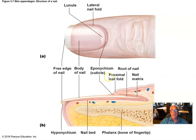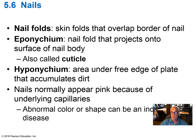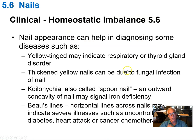Nails, an appendage of the skin, are important for protection of the tip of the finger and allow us to have a lot of capability in terms of manipulating small objects in our environment. But they also can be used diagnostically for identifying nutritional and disease conditions.